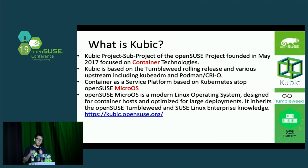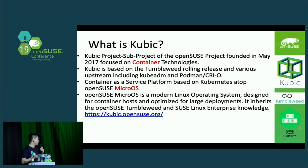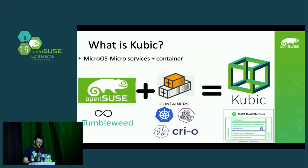Yesterday there was an amazing talk about Kubic, so I think everybody knows the basics. I'll give a short introduction. Kubic is a subproject of OpenSUSE, founded in May 2017, focused on container content. It's based on the Tumbleweed rolling release and various upstreams including kubeadm, Parmeng, and Quail. It's a container service platform based on Kubernetes on top of OpenSUSE MicroOS — a minimal Linux operating system designed for container hosts and optimized for large deployments. It has both Tumbleweed and CAST editions. So if you favor Tumbleweed and want to use containers, Kubic is your best choice.